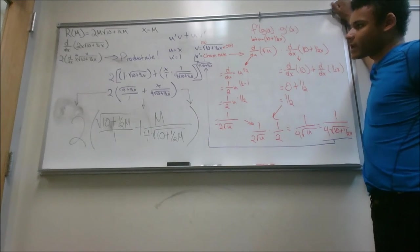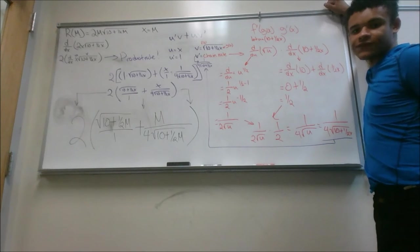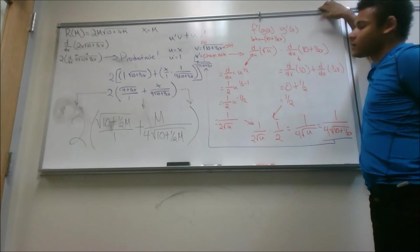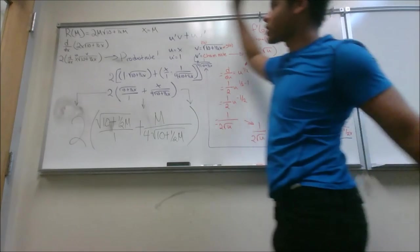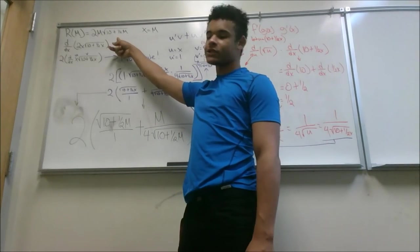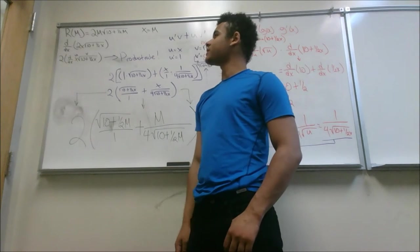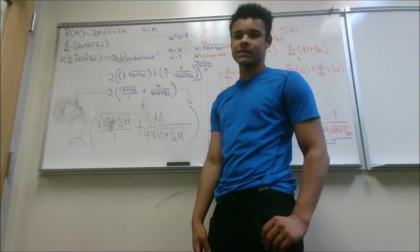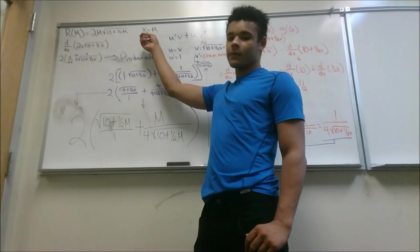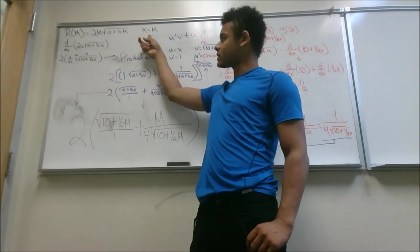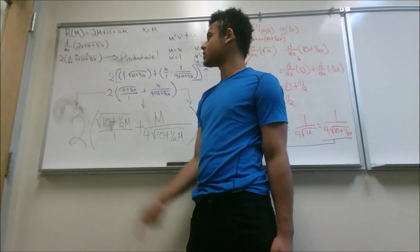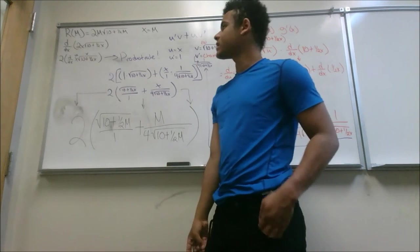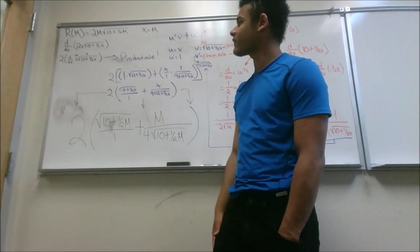These are all of the mathematic processes. I have the first part in black, the product rule is in purple, and the chain rule is in red. So, we'll start over here. We're given R of M equals 2M times the square root of 10 plus 1 half M. Just because I like to deal with X's instead of M's, I'll have M equal X for the rest of everything.